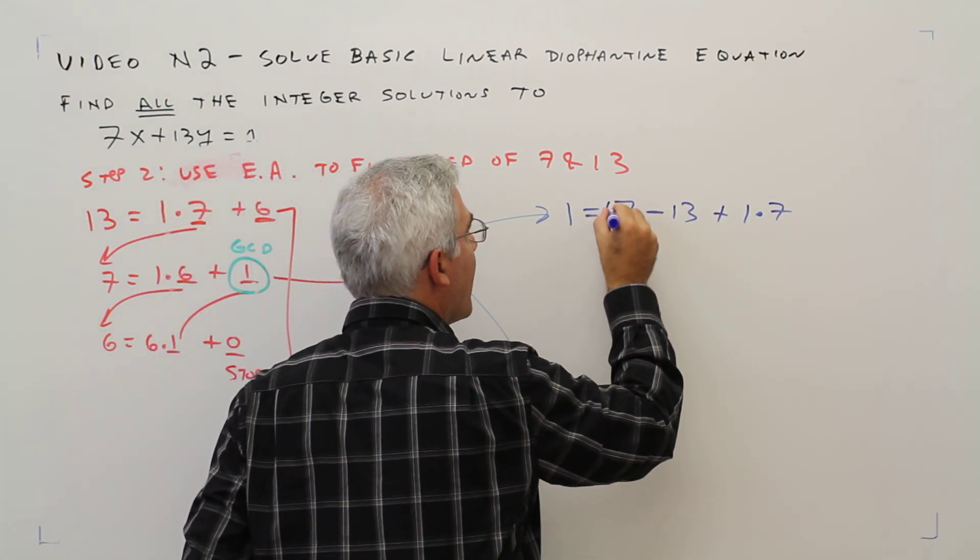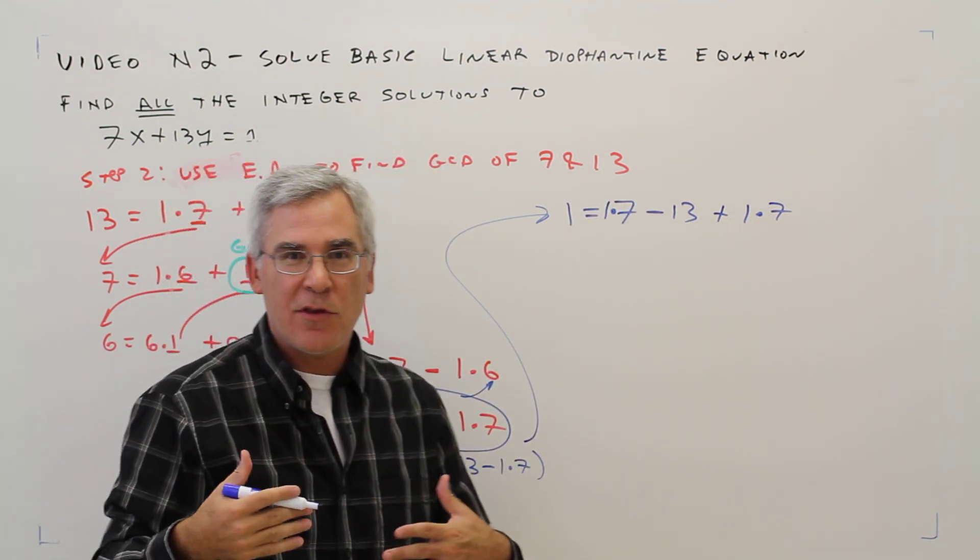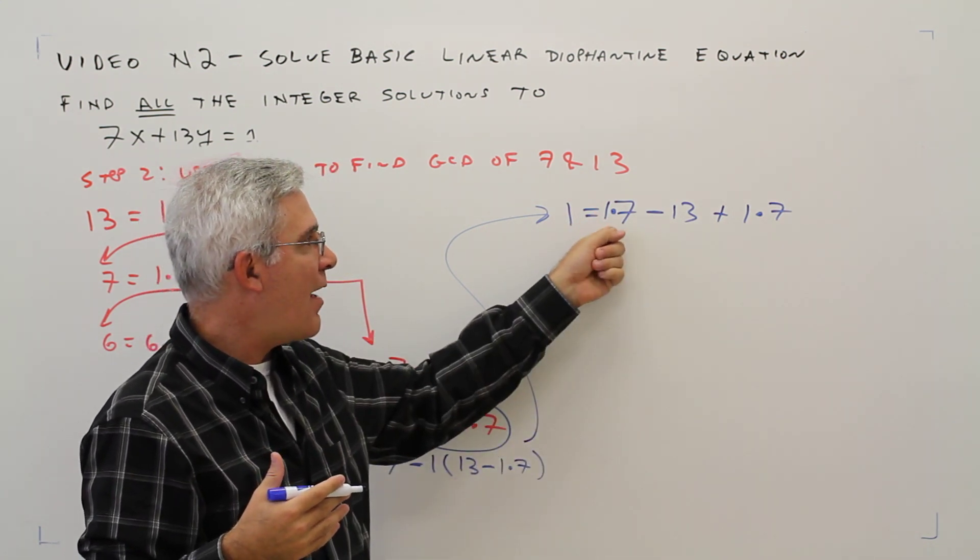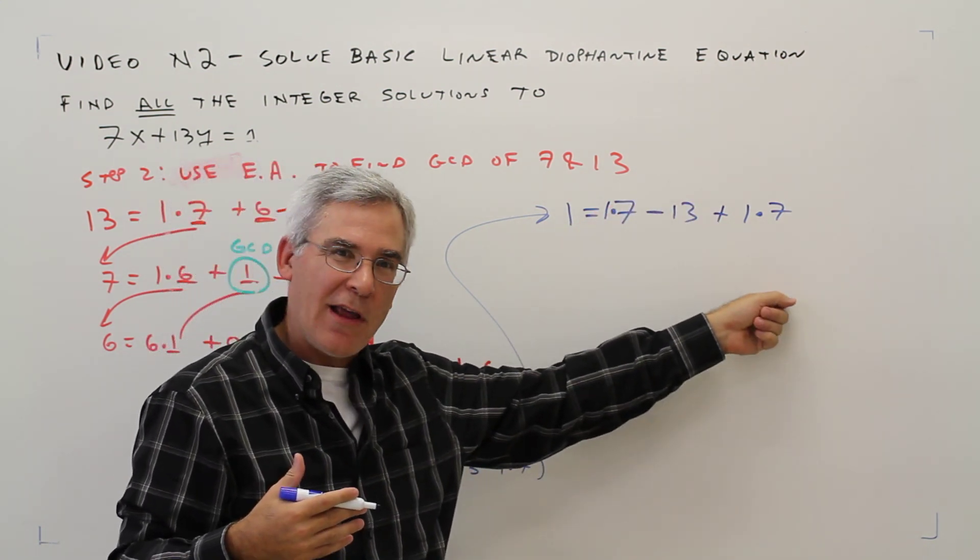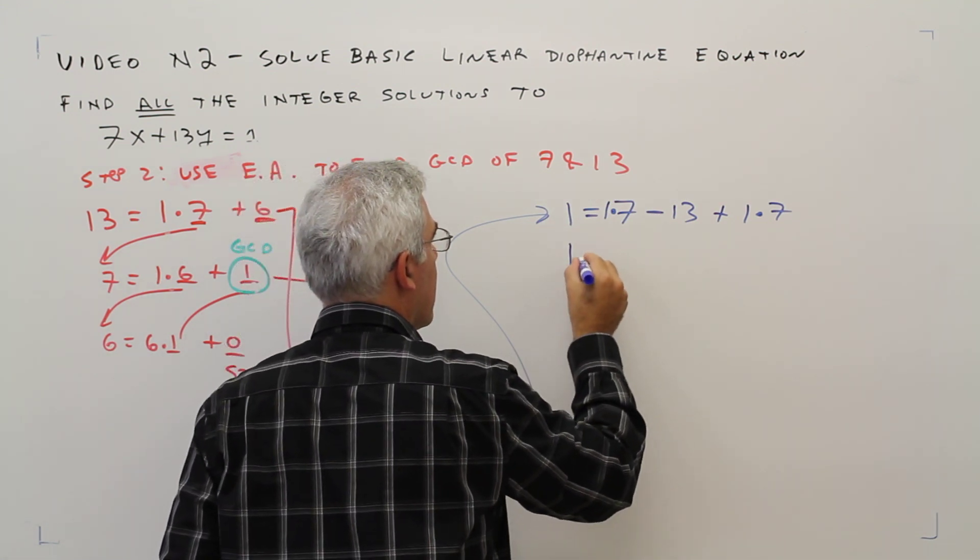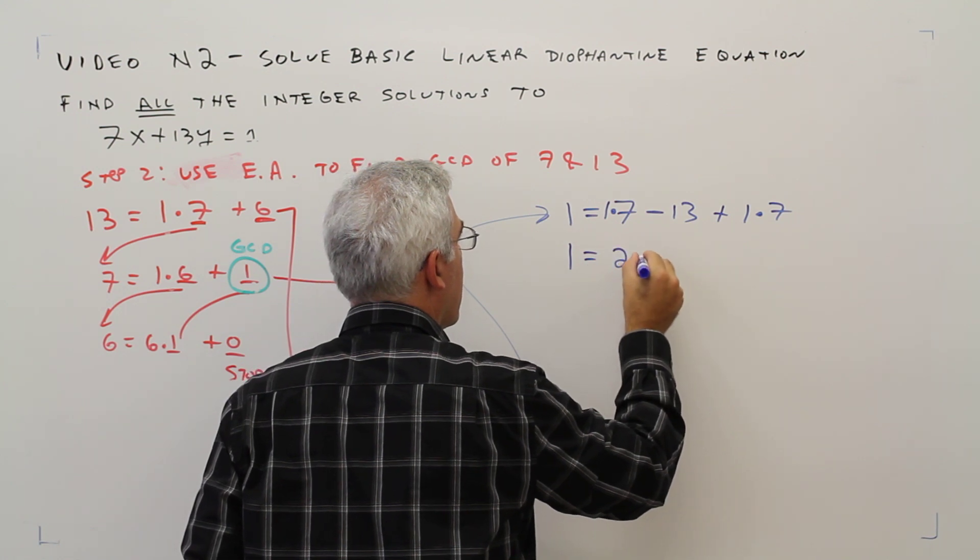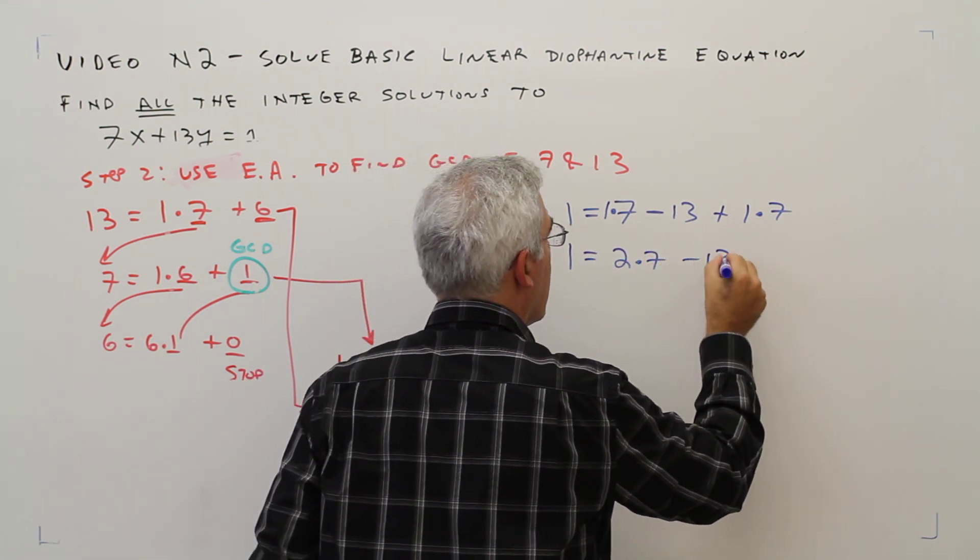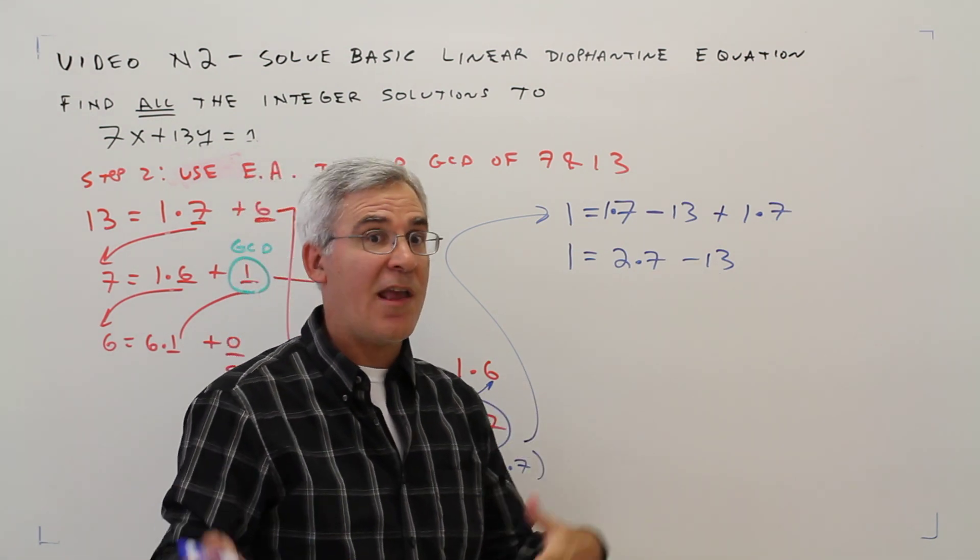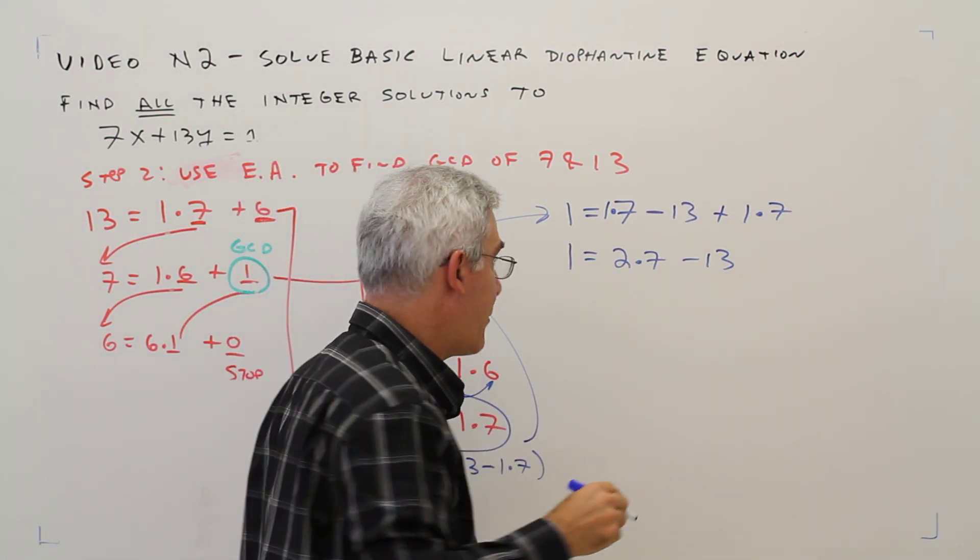I'm going to say 1 times 7, just so you can see the like terms easier. So if I get a 1 times 7 plus a 1 times 7, I've really got a 2 times 7. Instead of saying minus 13, I'm going to say minus 1 times 13.